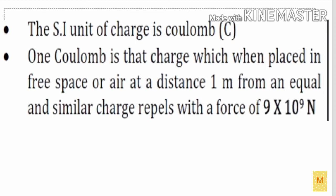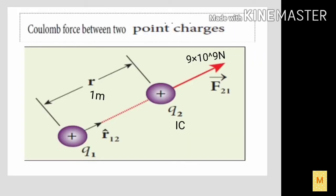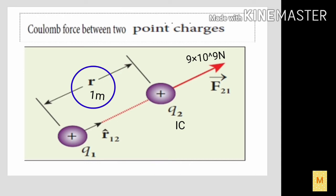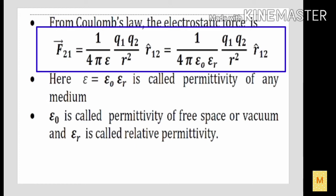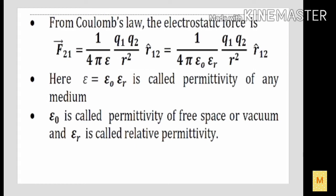How is the charge of a particle represented? Usually, the charge of the particle is represented by the SI unit, which is coulomb. So the SI unit of charge is coulomb. The definition for one coulomb: one coulomb is defined as the unit of charge which, when placed in air medium or vacuum at a distance of 1 metre from a similar charge, will experience a repulsive force of 9 × 10⁹ Newton. From Coulomb's law, the electrostatic force is represented by the notation F₂₁, which indicates the force on charge q2 by charge q1, equal to 1/(4πε) × q1q2/r² × r̂₁₂.